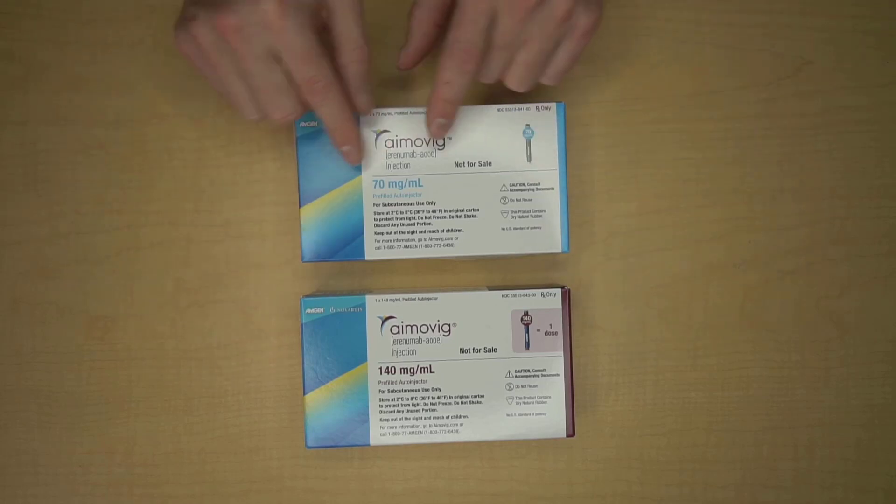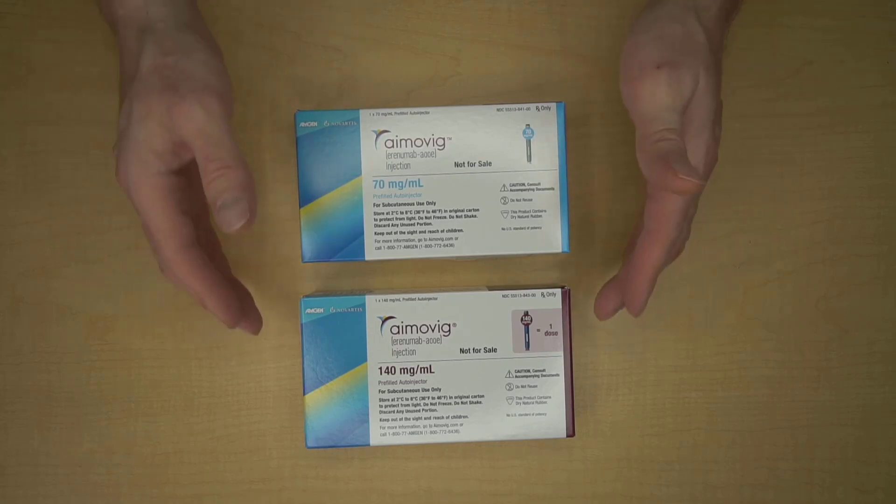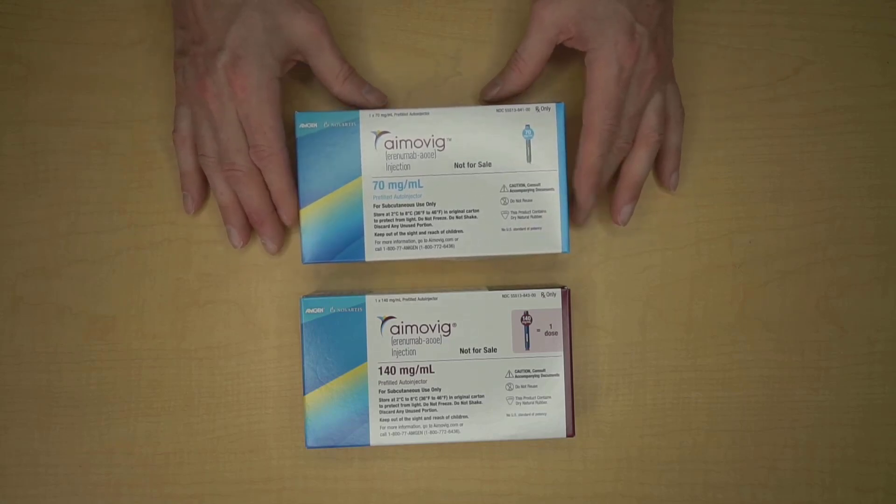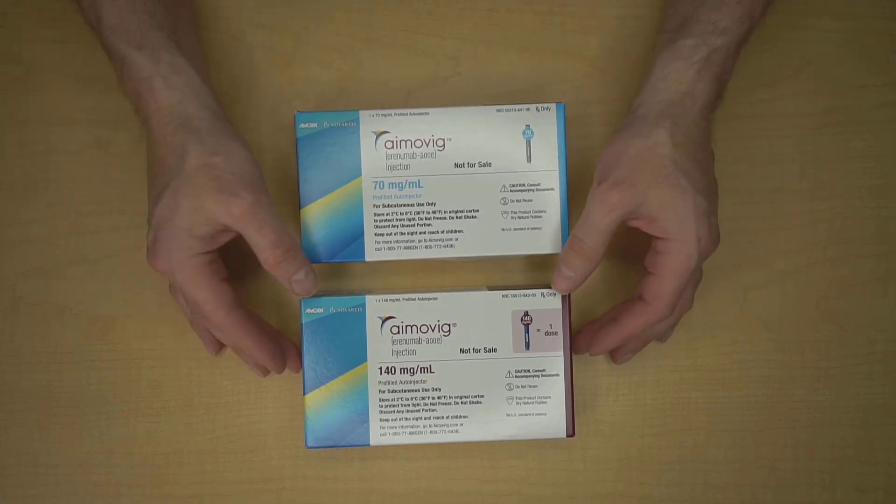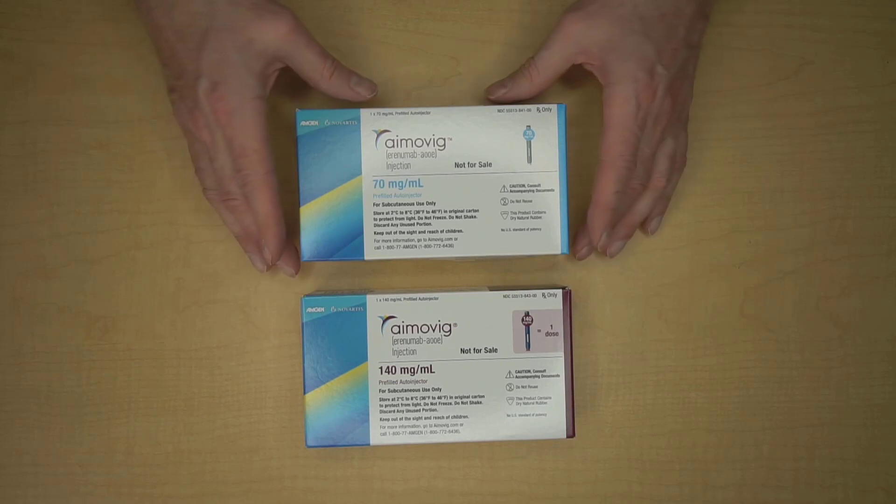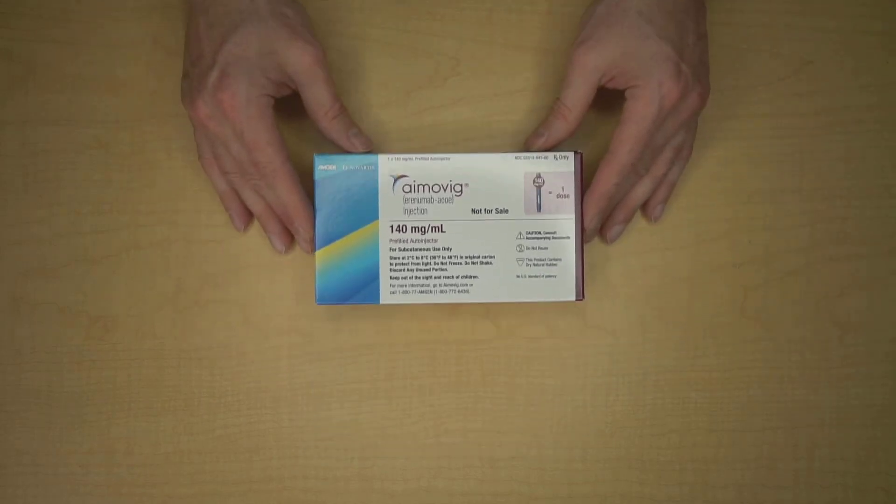When Amovig first came out, it was only available in a 70 milligram pen, but now Amovig has a 70 and a 140 milligram pen. So when Amovig first came out, people on the 140 milligram dose would be taking two 70 milligram injections. Now they can take one injection that has 140 milligrams in it. Because these are very similar, I'm just going to put one of these away, and we're going to open the 140 milligram dose.